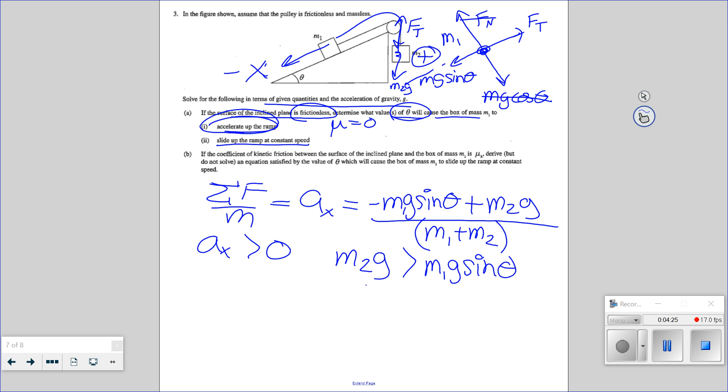What values of theta? Okay, in fact, so then here, G is 10 meters per second squared. The plus and minus means direction. Okay, so then I have to have theta is the inverse sine of M2 over M1.